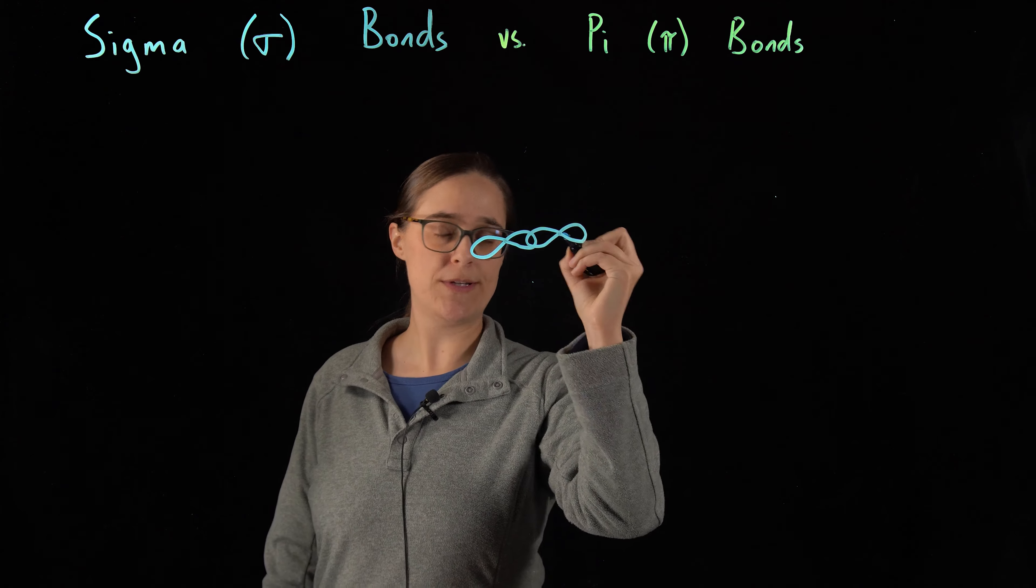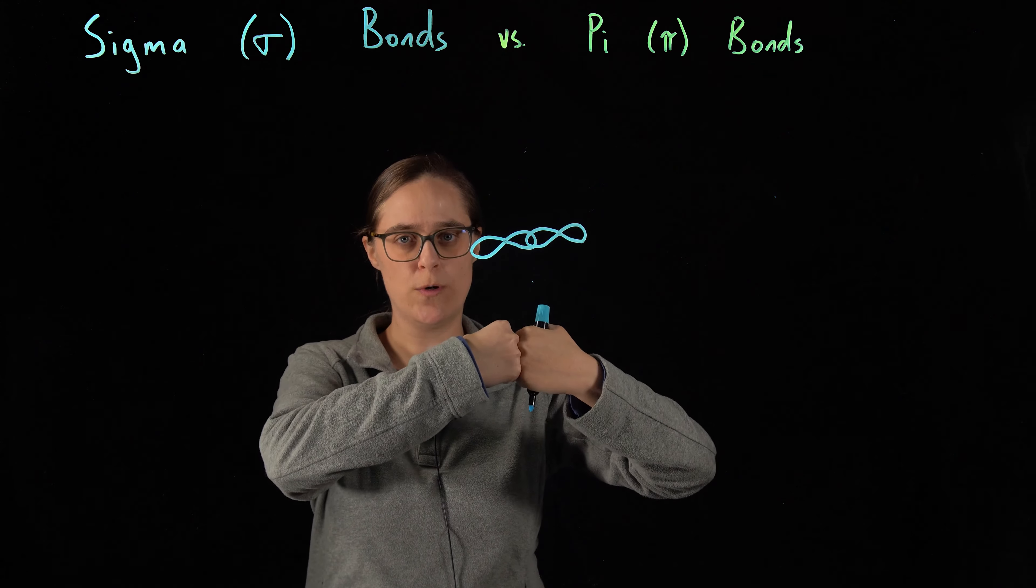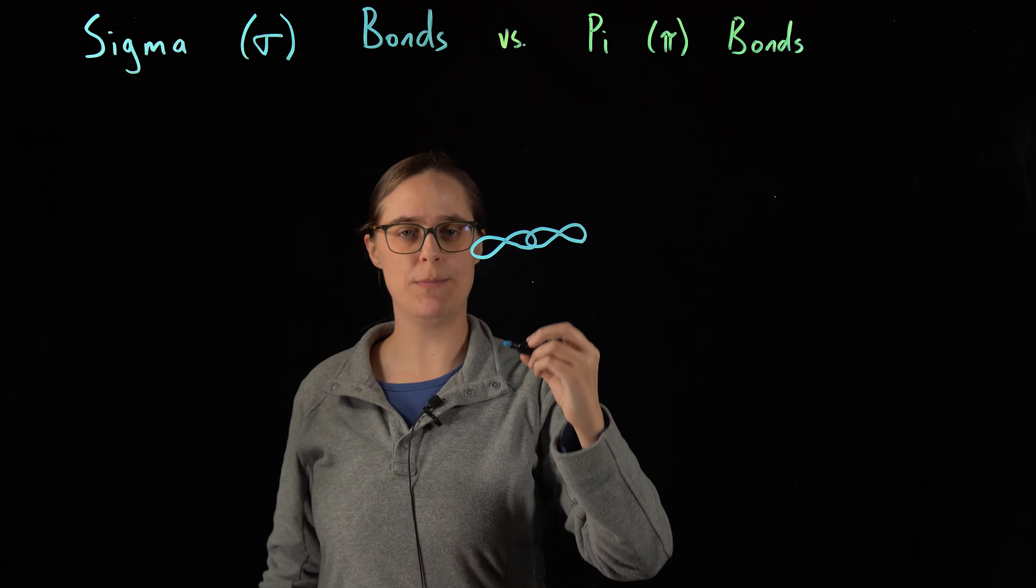One way in which we can get orbitals to overlap is this head-to-head overlap. This particular orientation is called a sigma bond.